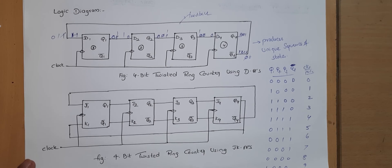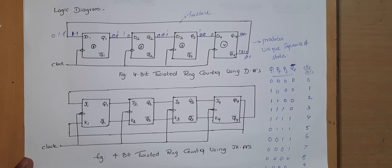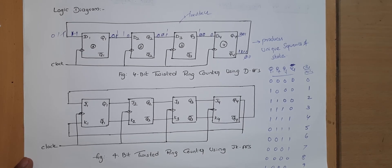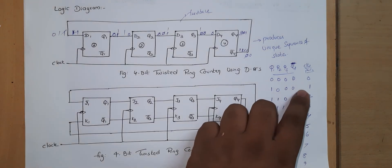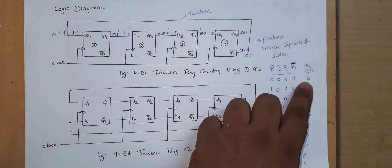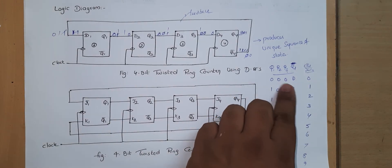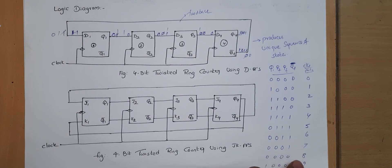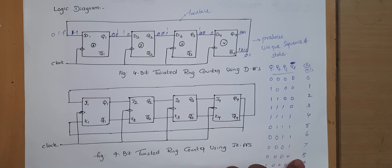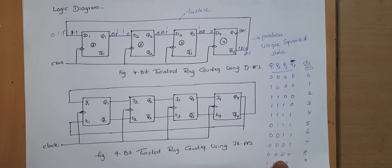There are eight unique states in total. Starting at 0 0 0 0, after applying eight consecutive clock pulses, and after the ninth clock pulse we get back to the initial state. This is the working principle and sequence table of the 4-bit twisted ring counter.